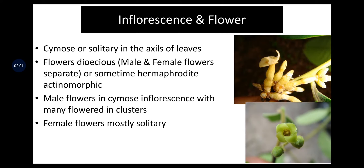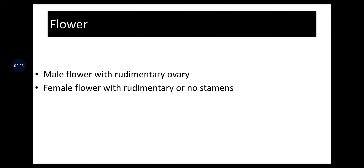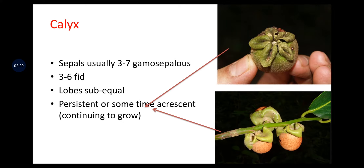In inflorescence and flower, cymes are solitary in the axils of leaves. Flowers are dioecious — male and female flowers borne on separate plants — or sometimes hermaphrodite and actinomorphic. Male flowers in cymose inflorescence with many flowers in clusters. Female flowers mostly solitary. Male flowers with rudimentary ovary; female flowers with rudimentary or no stamens because they are dioecious.